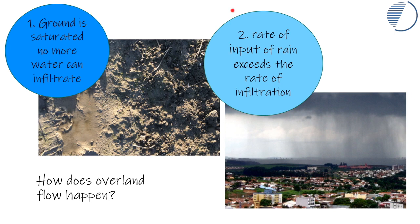Secondly, you get the rate of rainfall greatly exceeding the rate at which water can move into the soil surface, and when that happens you get overland flow. You can see a severe storm here over the city.